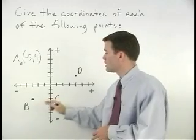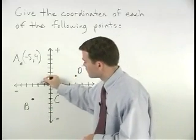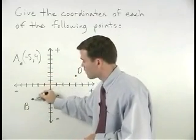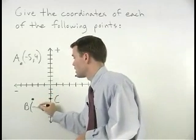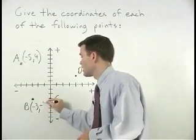So for point B, we go to the left 3 and down 3. So that's negative 3, negative 3.